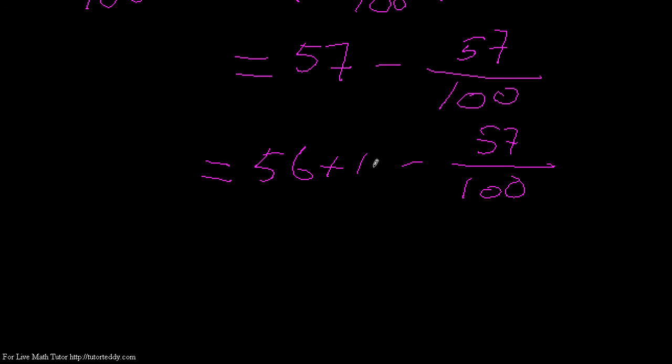Now see, this 1 minus 57/100—what is this portion? This is 56 plus, my LCM is 100. The denominator here is 1, so 100 divided by 1 is 100, and 100 times 1 gives 100. Then minus, 100 divided by 100 is 1, and 1 times 57 is 57.